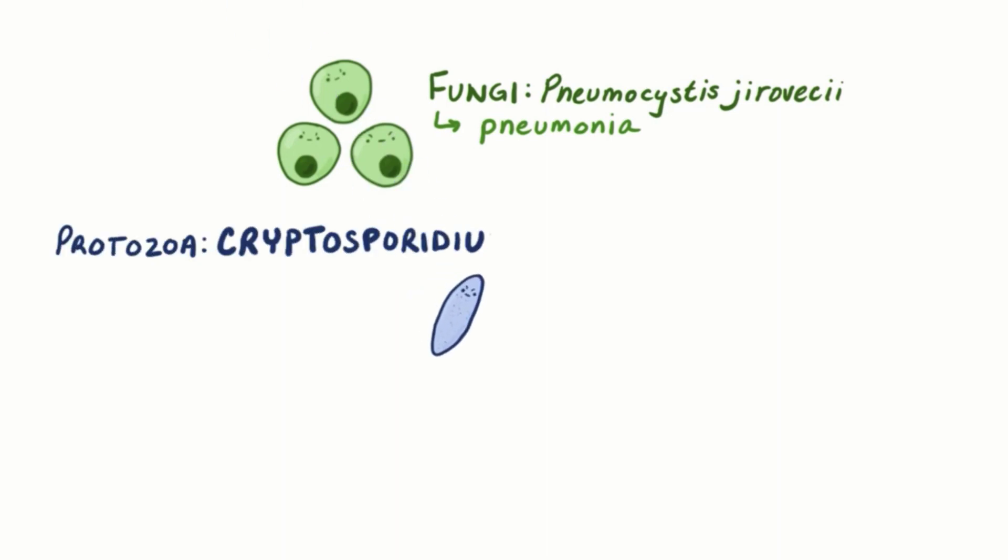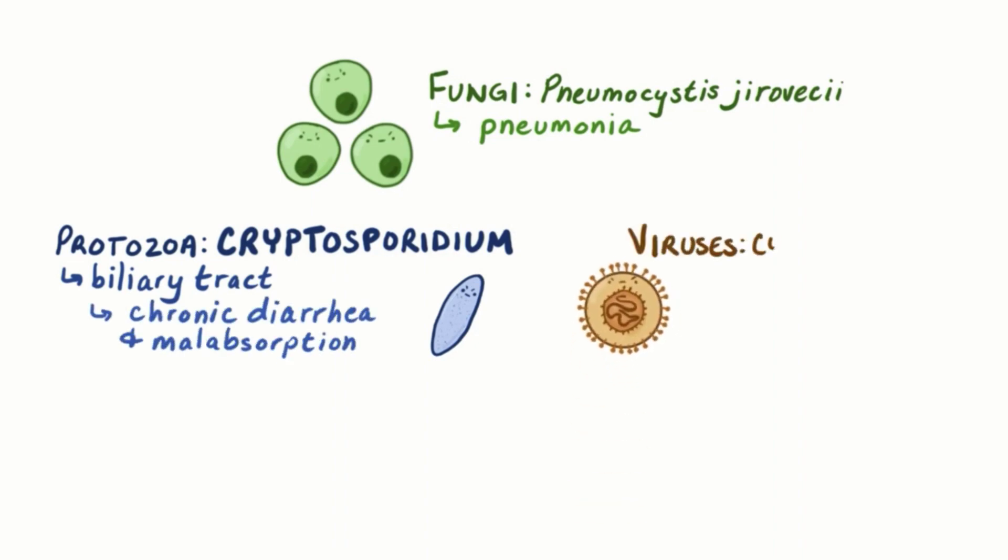Ultimately, individuals with hyper-IgM syndrome are predisposed to certain infections including fungi, like pneumocystis jirovecii, which causes pneumonia, protozoa like cryptosporidium, which infects the biliary tract and causes chronic diarrhea and malabsorption, viruses like cytomegalovirus, which often causes viral pneumonia or viral hepatitis, and encapsulated bacteria.